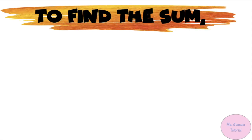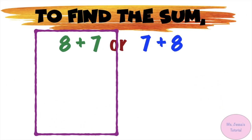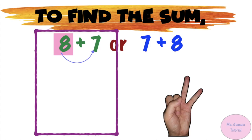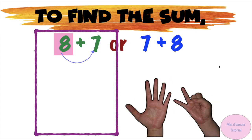Let us try to solve the problem. To find the sum, we can either write 8 plus 7 or 7 plus 8. Let us solve first 8 plus 7. In adding numbers, we're going to start at the big number, then count forward until we reach the 7th number. 8 on your mind: 8, 9, 10, 11, 12, 13, 14, 15. So 8 plus 7 equals 15.